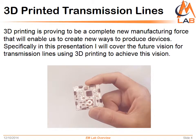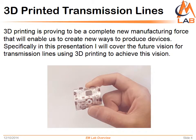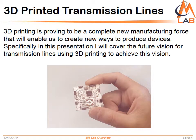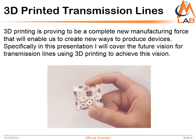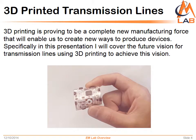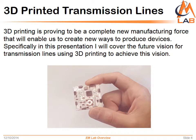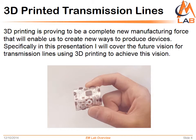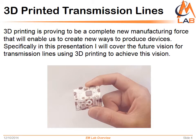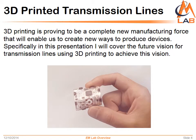The story of electromagnetics and transmission lines starts with the evolving of manufacturing technology. 3D printing is proving to be a completely new manufacturing force that will enable us to create new ways to produce transmission lines. Specifically in this presentation I will cover the future vision, challenges, and possible solutions to fully manufactured 3D printed microstrip transmission lines.